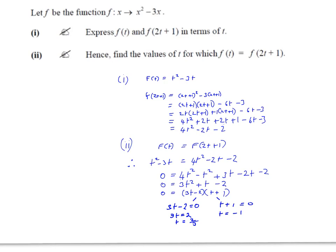First of all, it tells us let f be the function f(x) goes to x squared minus 3x. That's our function. Then it asks us to express f(t) and f(2t+1) in terms of t. Now I find that many students don't really understand what this means. What it means is you want to find basically what f(t) is by substituting t into the function.